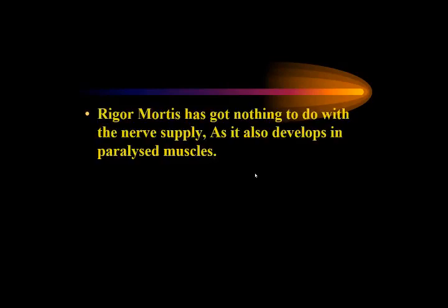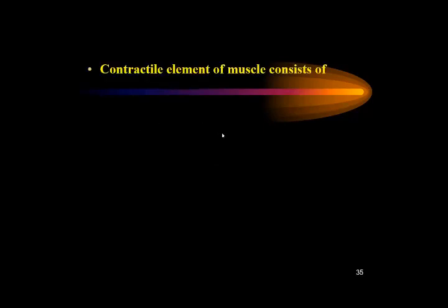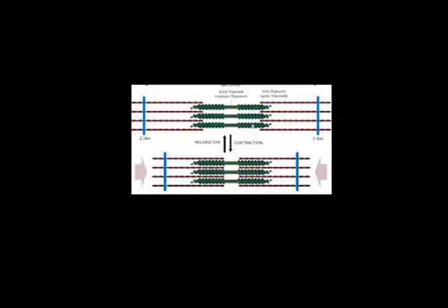What is the chemical basis of rigor mortis? Rigor mortis has nothing to do with nerve supply, as it also develops in paralyzed muscles. The contractile elements of the muscle consist of actin and myosin filaments — these are proteins. They interdigitate with each other: less so in the relaxed state, and more so in the contracted state. Calcium influx following an action potential through the nerve fiber into the muscle causes the release of calcium from the sarcoplasmic reticulum, causing attraction between actin and myosin heads, leading to excitation-contraction coupling.